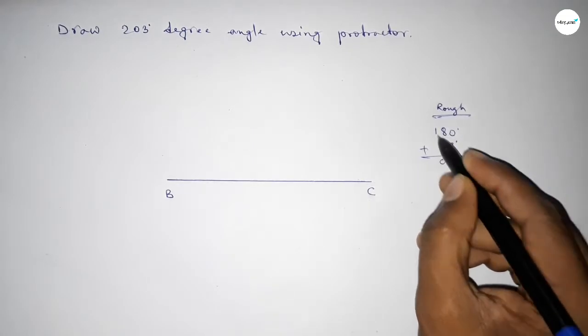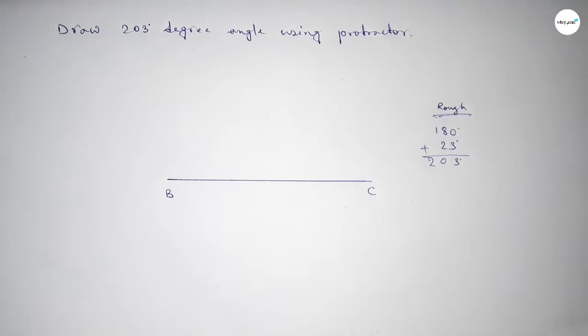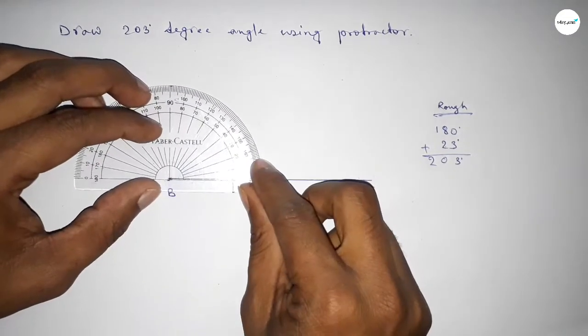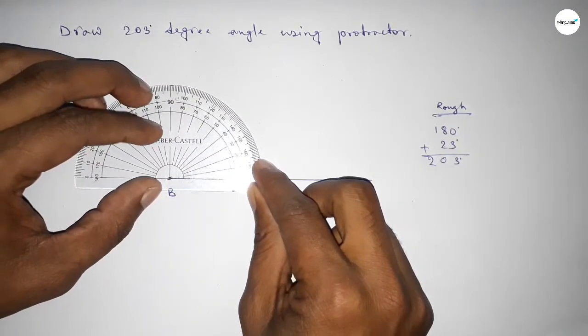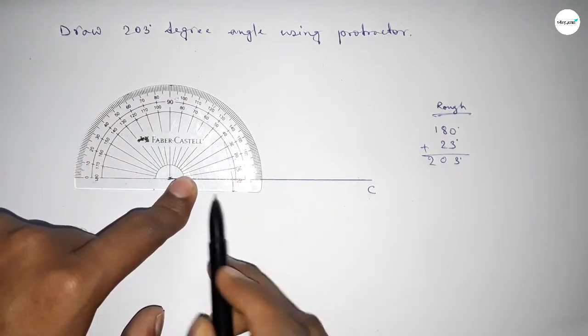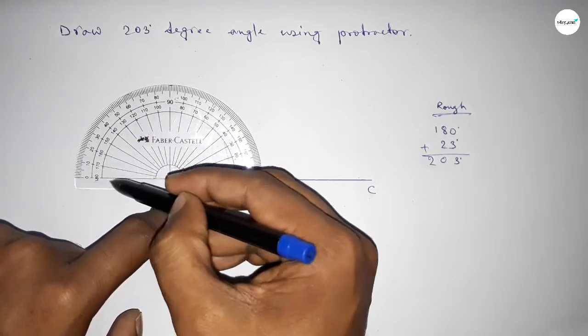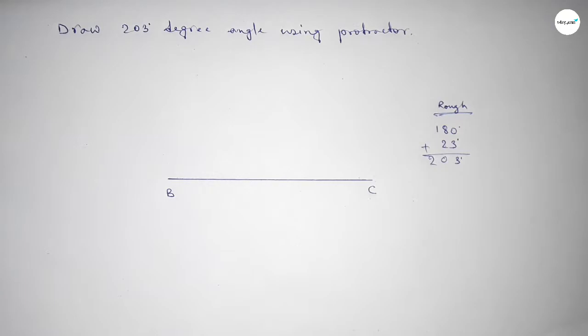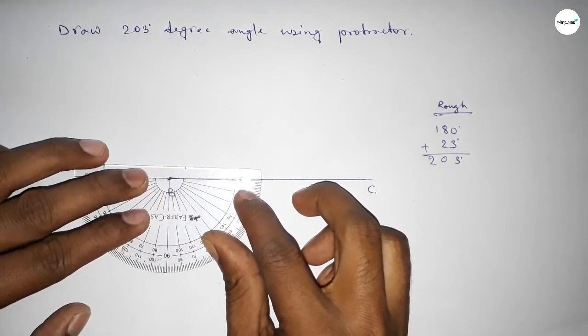First we have to count 180 degree, so putting the protractor on the point B by this way and counting the angle. So this is 180 degree, plus putting the protractor on the point B by this way and counting 23 degree angle.